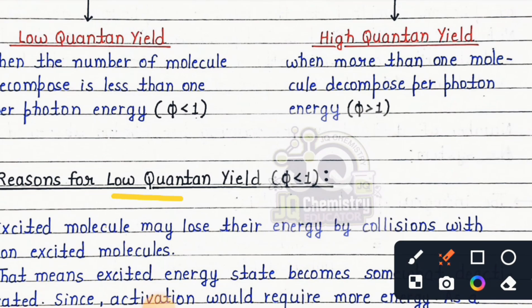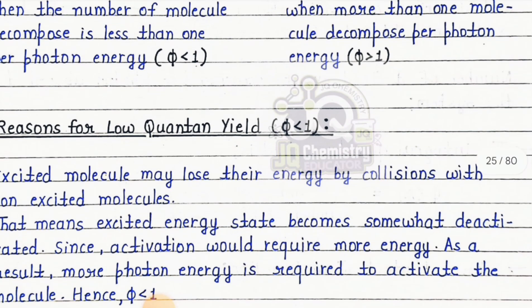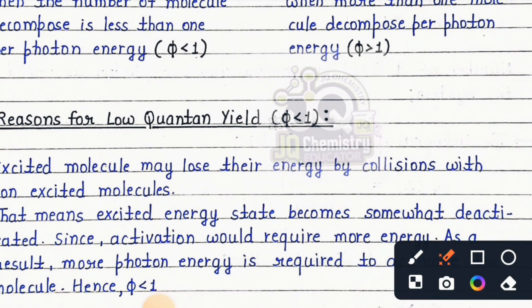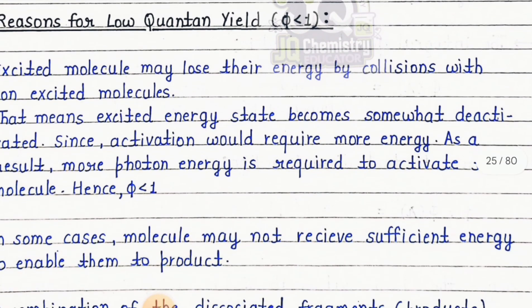Reasons for low quantum yield: Excited molecules may lose their energy by collision with non-excited molecules. The excited energy state becomes deactivated. Since deactivation would require more energy, as a result more photon energy is required to activate the molecule.